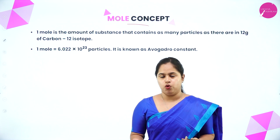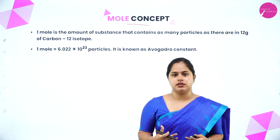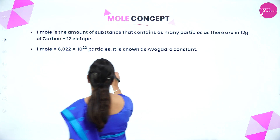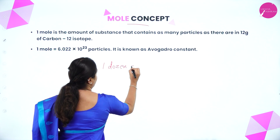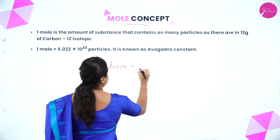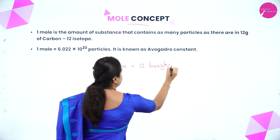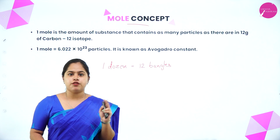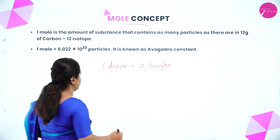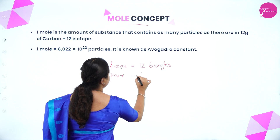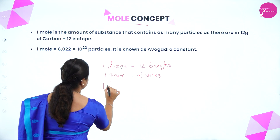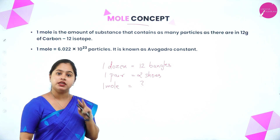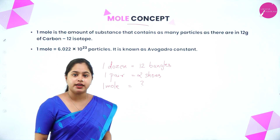Before we begin with what a mole is, let's think of everyday examples. When you go to a shop and buy bangles, you buy them in dozens — one dozen equals 12 bangles, two dozens equals 24 bangles. Similarly, when buying shoes, you buy one pair, which equals two shoes. In the same way, we are going to see how many particles will be there in one mole.